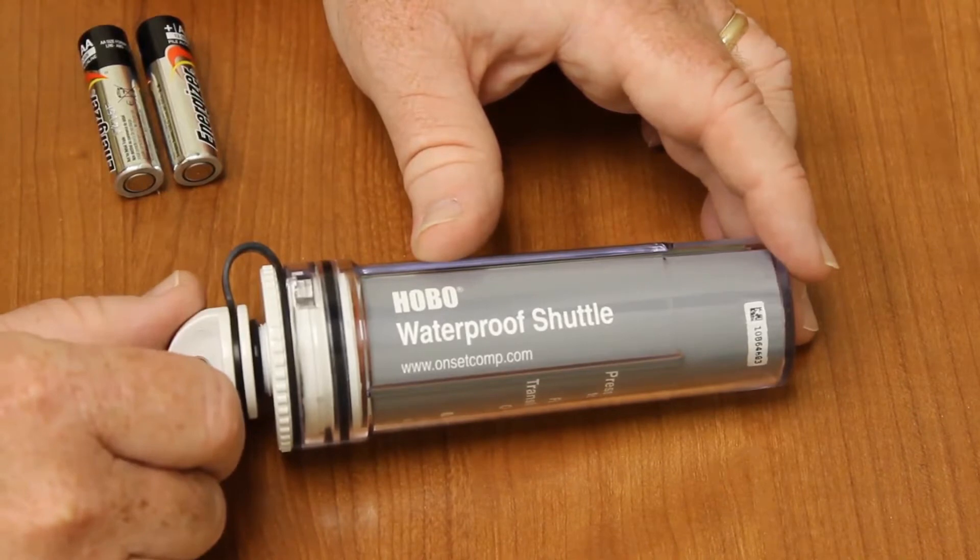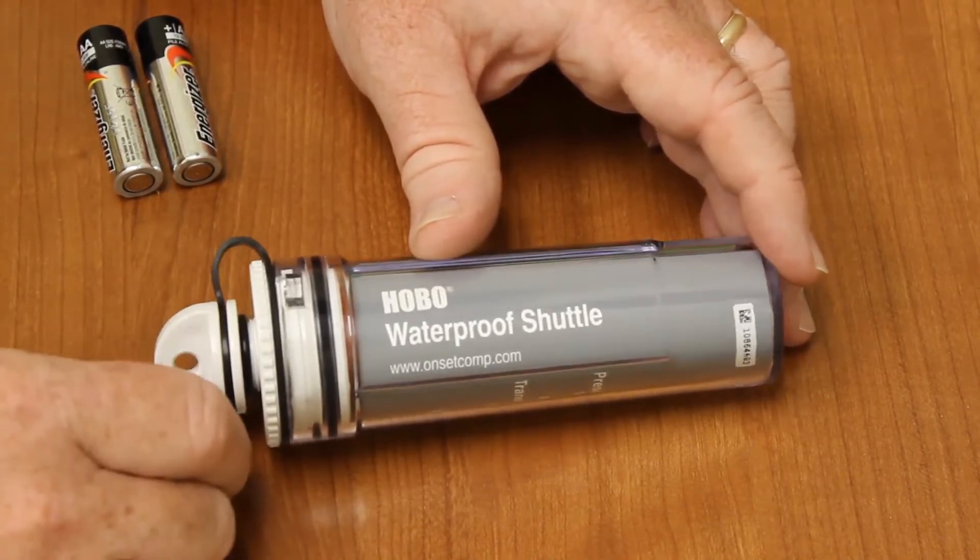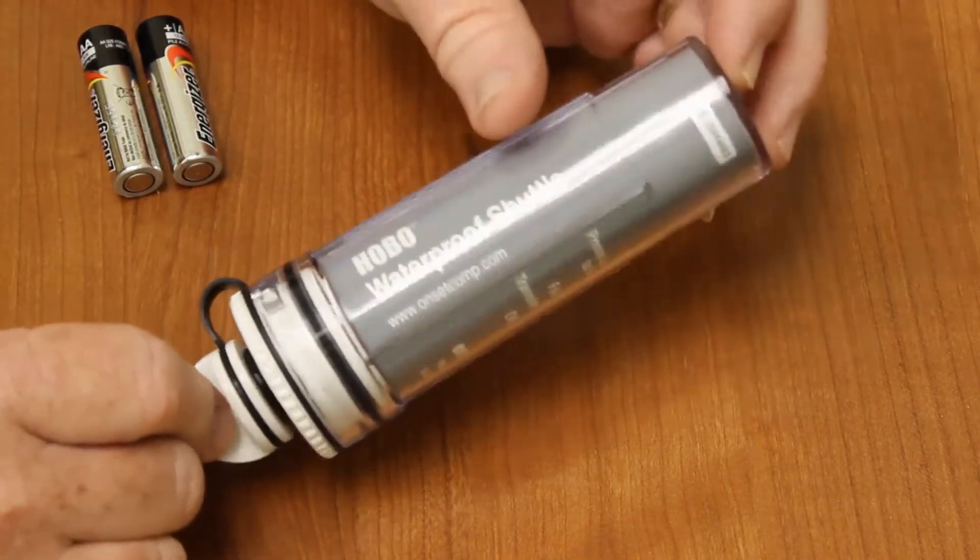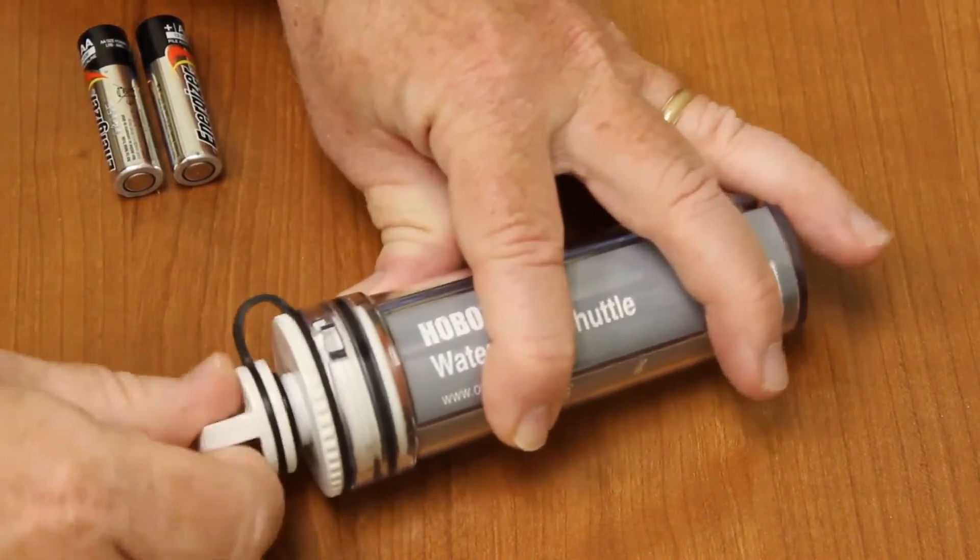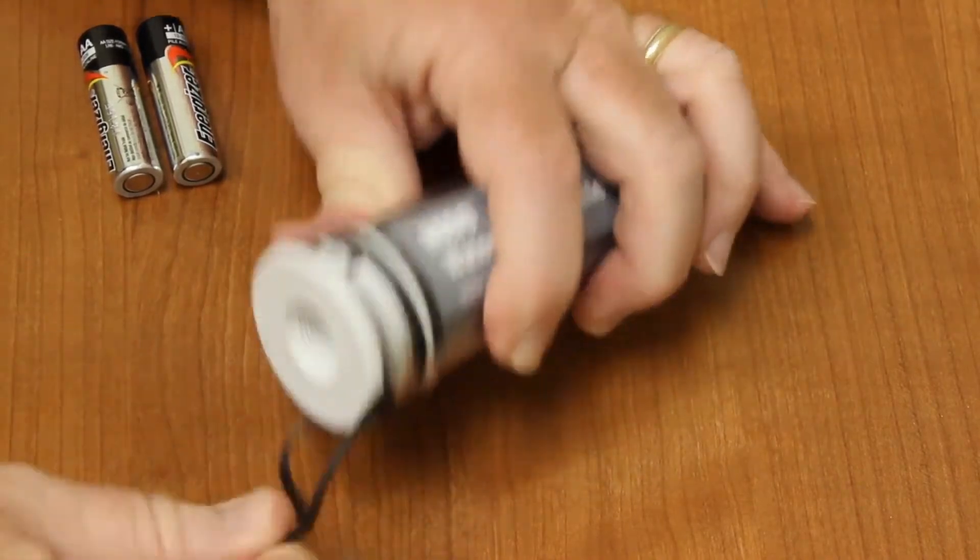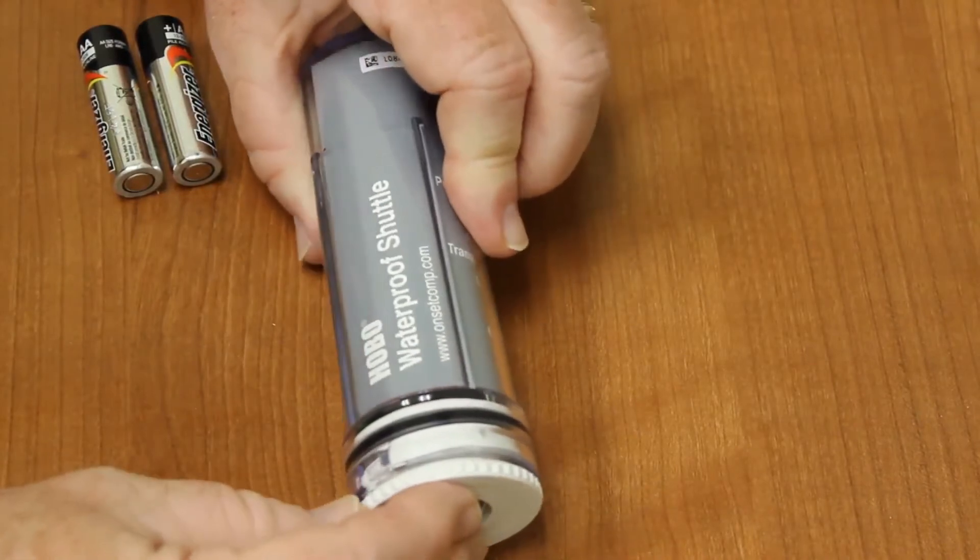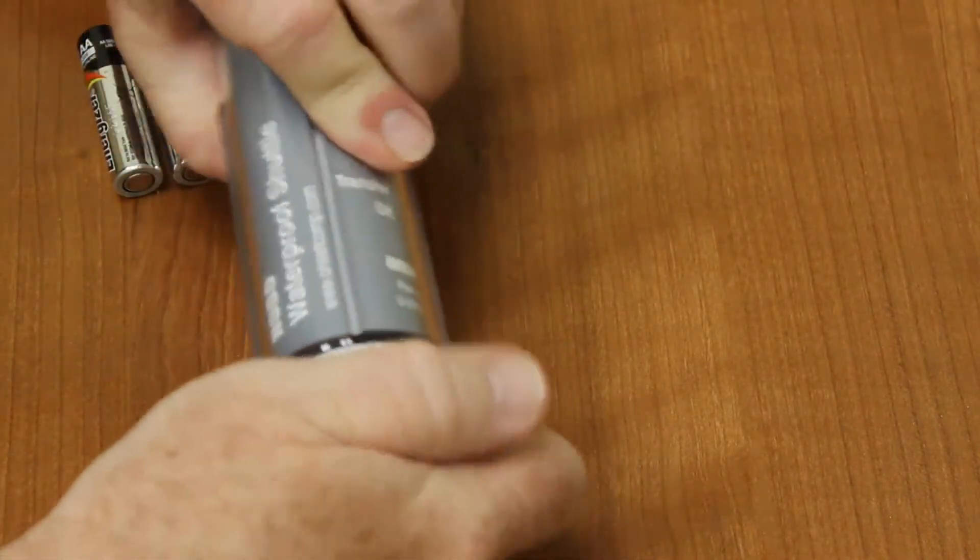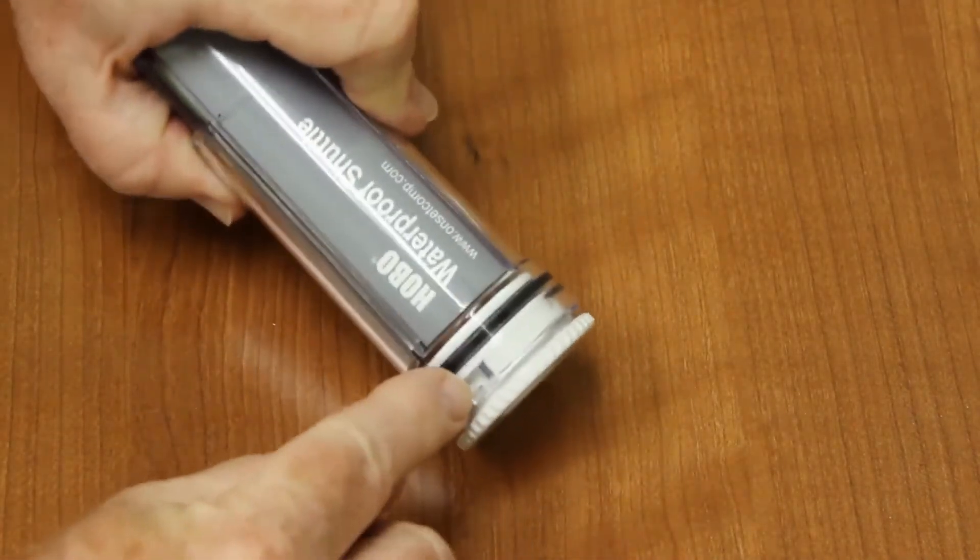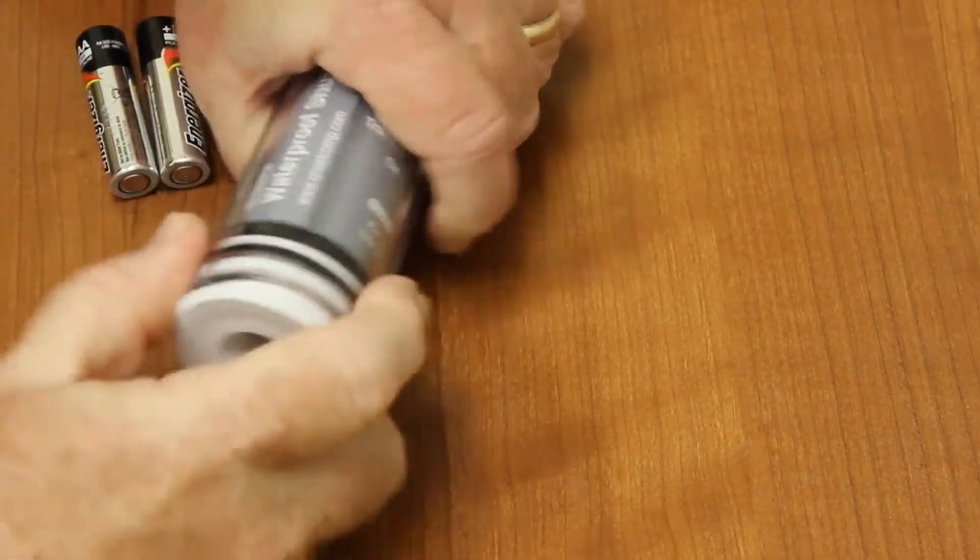You just have to make sure to relaunch that Shuttle before you use it in the field again, and we'll show you how to do that. The first step, we need to remove the USB cover, and then remove the O-ring. We'll put this aside, and then you'll see that the cap has a little quarter turn lock on it, so you just want to turn that and then pop the cap off.